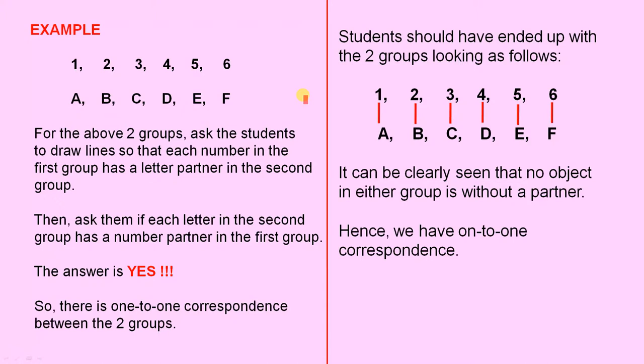Students should have ended up with the two groups looking as follows. So all the letters and all the numbers have partners. It can be clearly seen that no object in either group is without a partner, hence we have one-to-one correspondence.